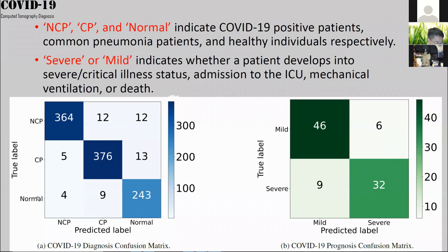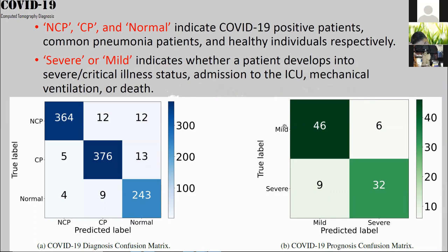This is a confusion matrix — the true label versus the predicted label. We hope the diagonal numbers are larger, as that means consistency between predicted and true labels. Off-diagonal numbers represent misclassifications. On the right is the severe versus mild condition classification — distinguishing patients who need ventilation or ICU from those with mild conditions.